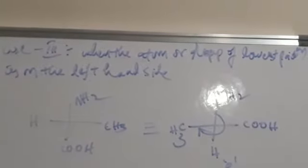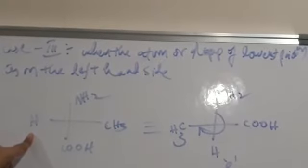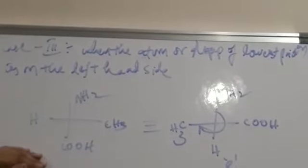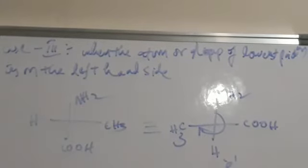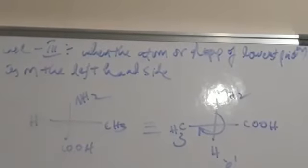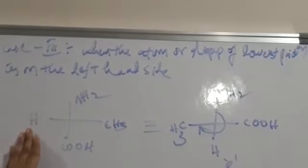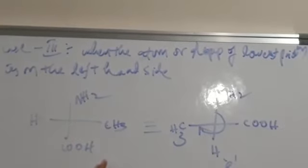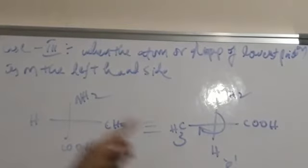Next, in case 3, if an atom with least priority is on the left hand side, in this case, without changing the position of the top groups, we had to rotate the molecule in anti-clockwise direction. Without changing the position of the top group, rotate the molecule in anti-clockwise direction. So by rotating the molecule in anti-clockwise direction, this is the anti-clockwise direction, we get this.